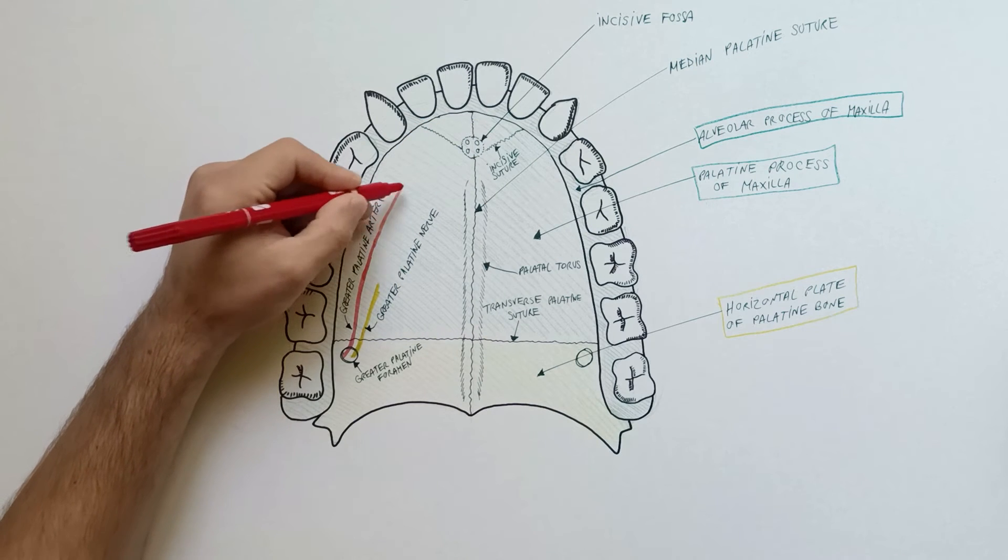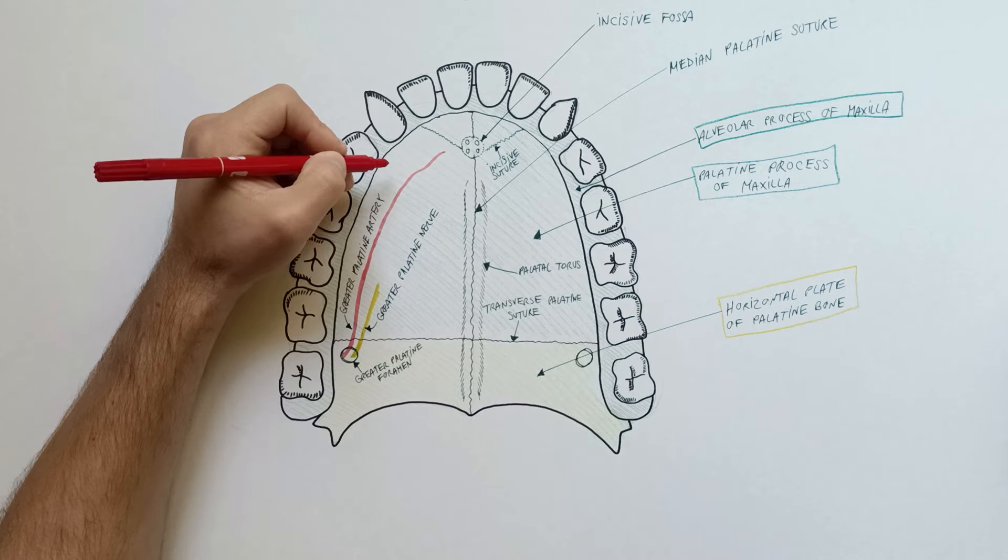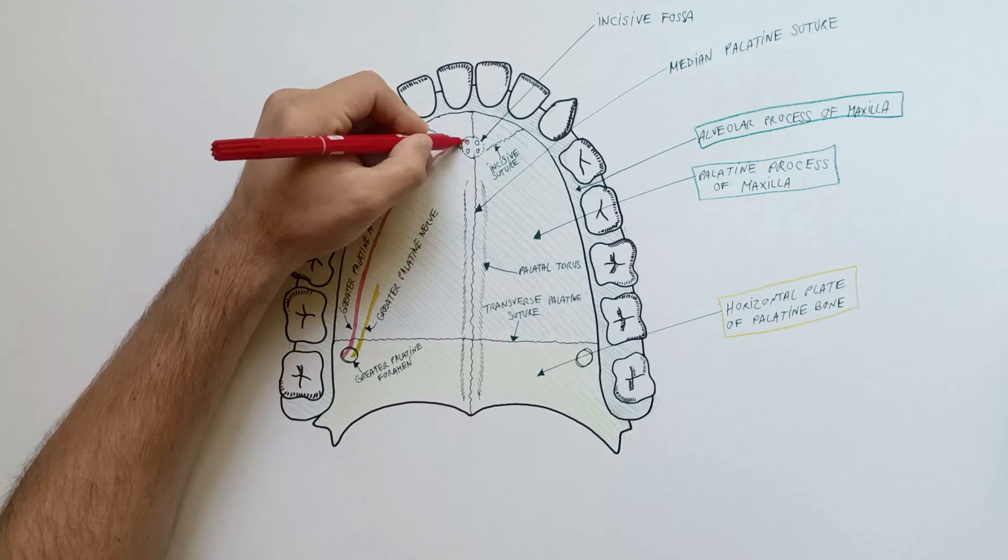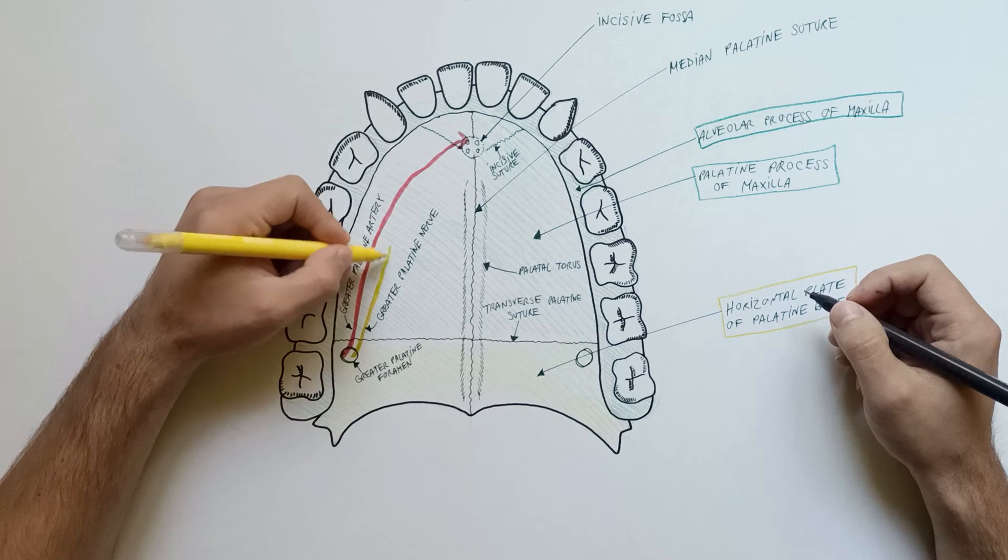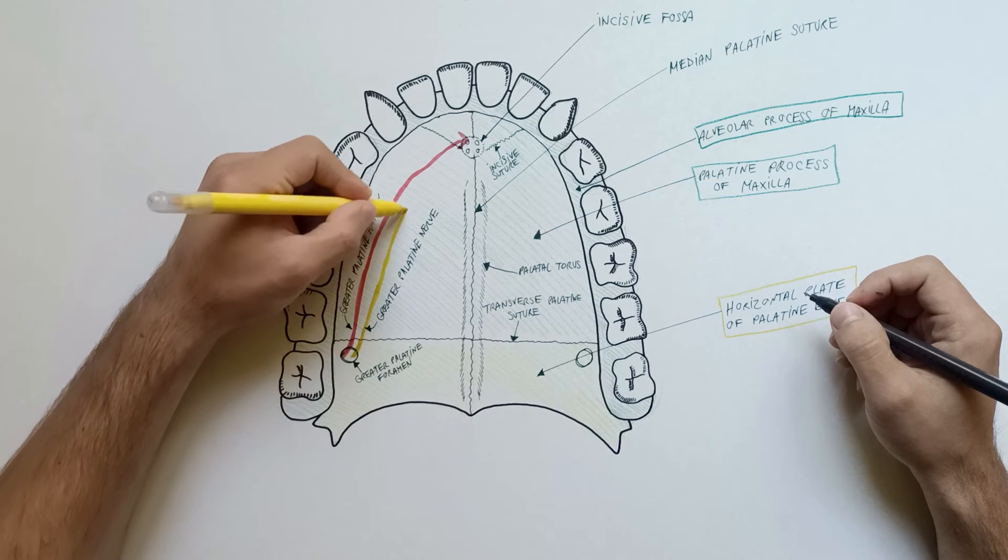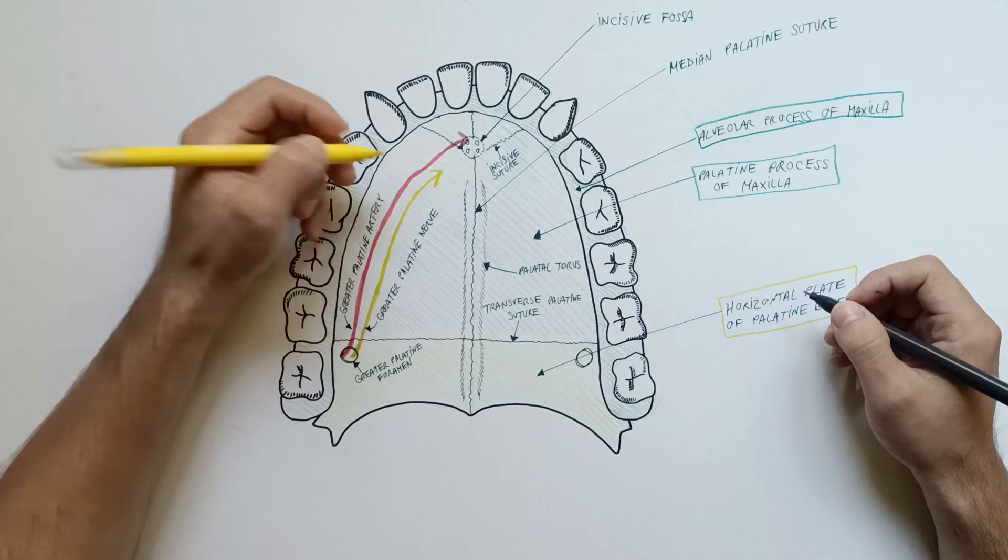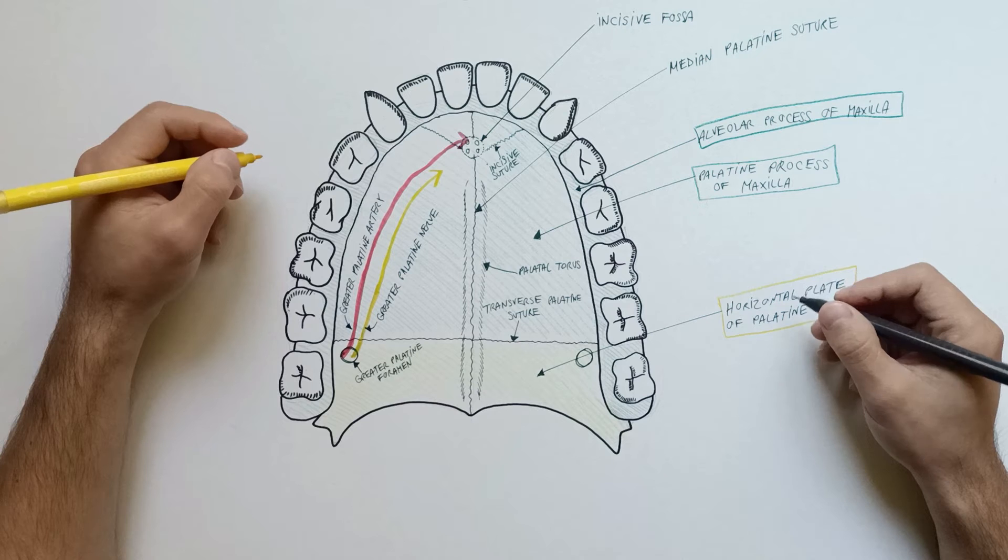The greater palatine artery reaches the incisive fossa and passes through an incisive canal on each side to enter the nasal cavity. The greater palatine nerve follows most of the course of the greater palatine artery and ends in close proximity of the incisive fossa.